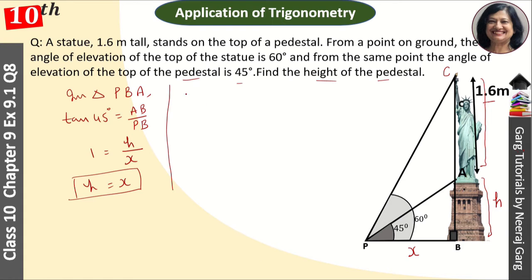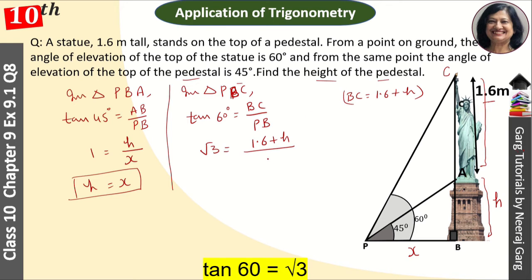Now we have triangle PBC. In this triangle, tan 60 degrees equals BC upon PB. Tan 60 degrees value is root 3, and BC is equal to 1.6 plus H. So here we have written 1.6 plus H divided by PB, which is x.